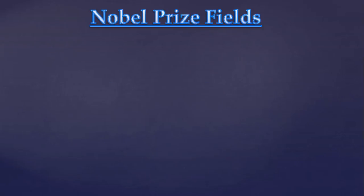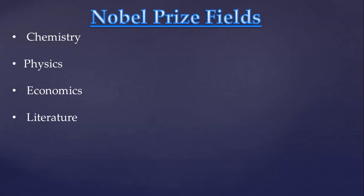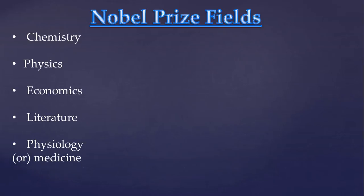There are six fields in which Nobel Prizes are awarded. They are Chemistry, Physics, Economics, Literature, Physiology or Medicine, and Peace.